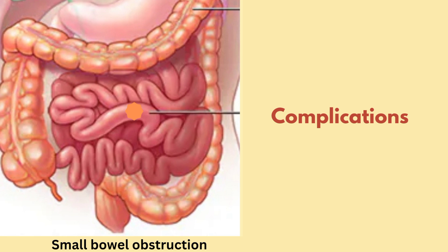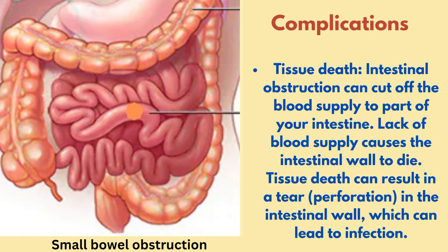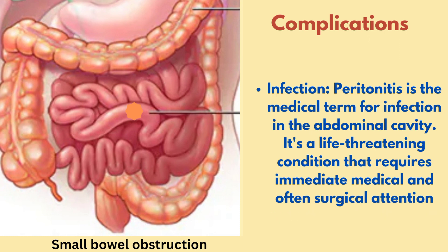Now let us see the complications. Untreated intestinal obstruction can cause serious life-threatening complications, including tissue death. Intestinal obstruction can cut off the blood supply to part of your intestine, causing the intestinal wall to die. This can result in a tear — also called perforation — in the intestinal wall, which can lead to infection. The second complication is peritonitis, a medical term for infection in the abdominal cavity. It is a life-threatening condition that requires immediate medical and often surgical attention.